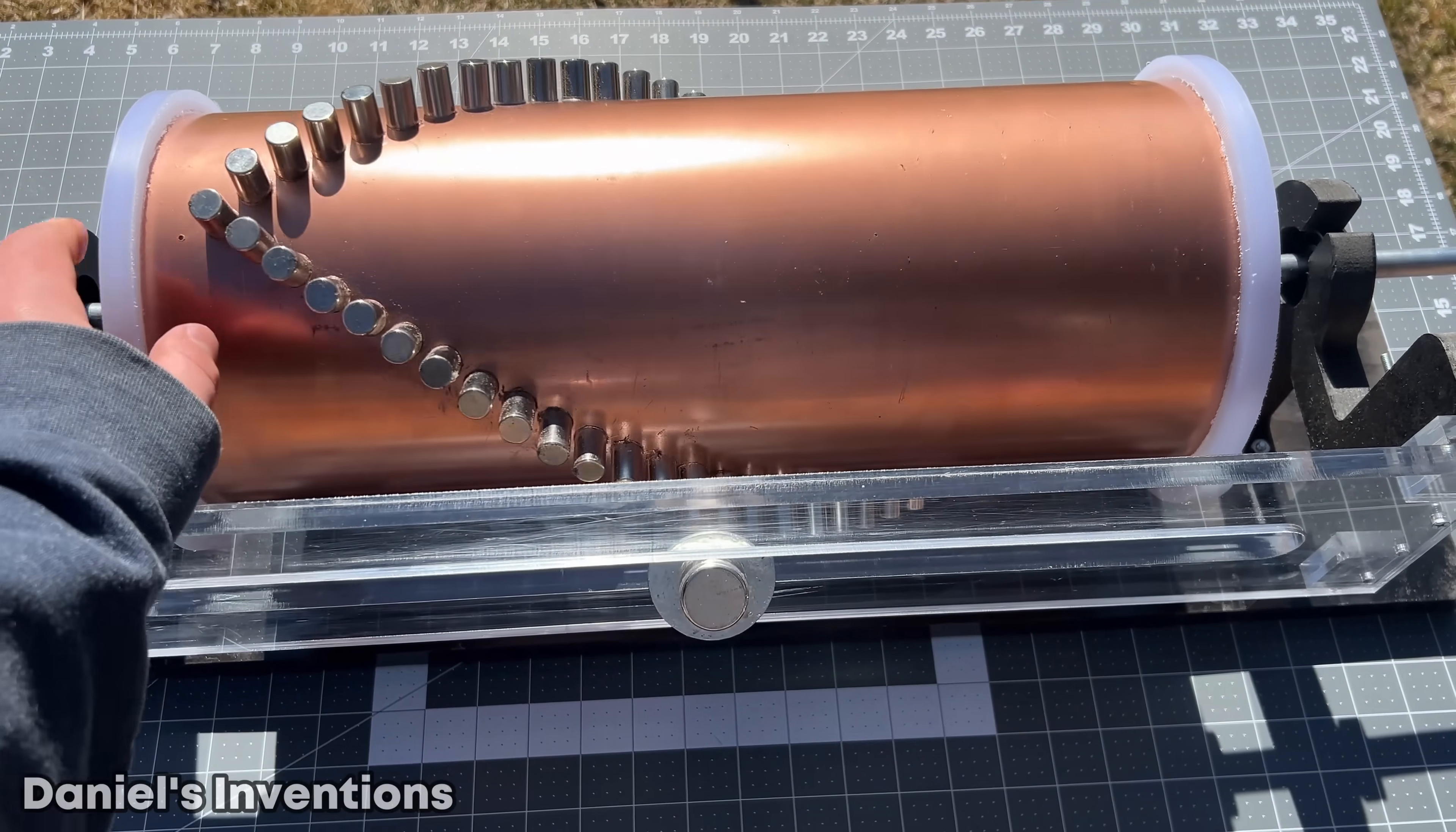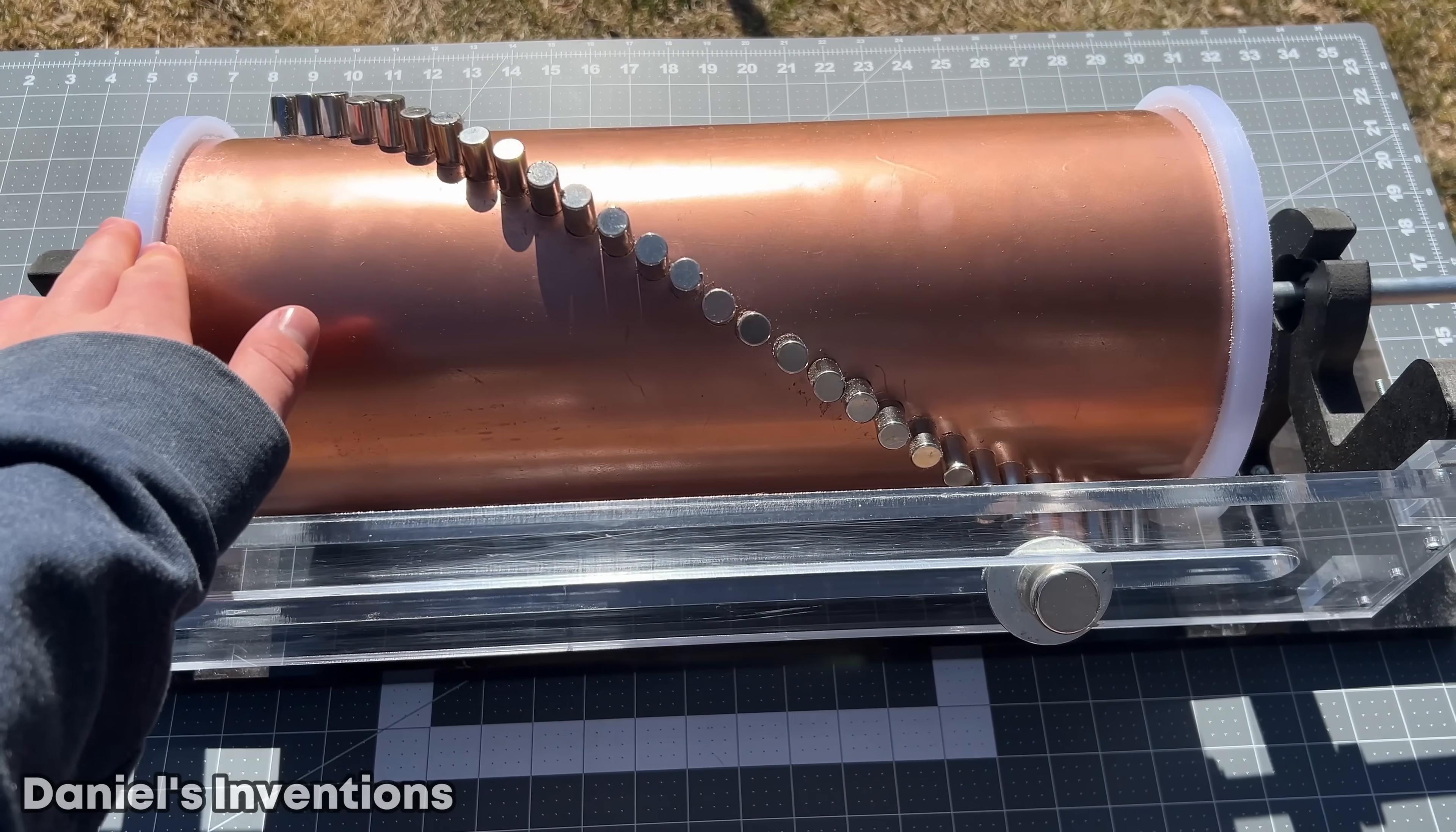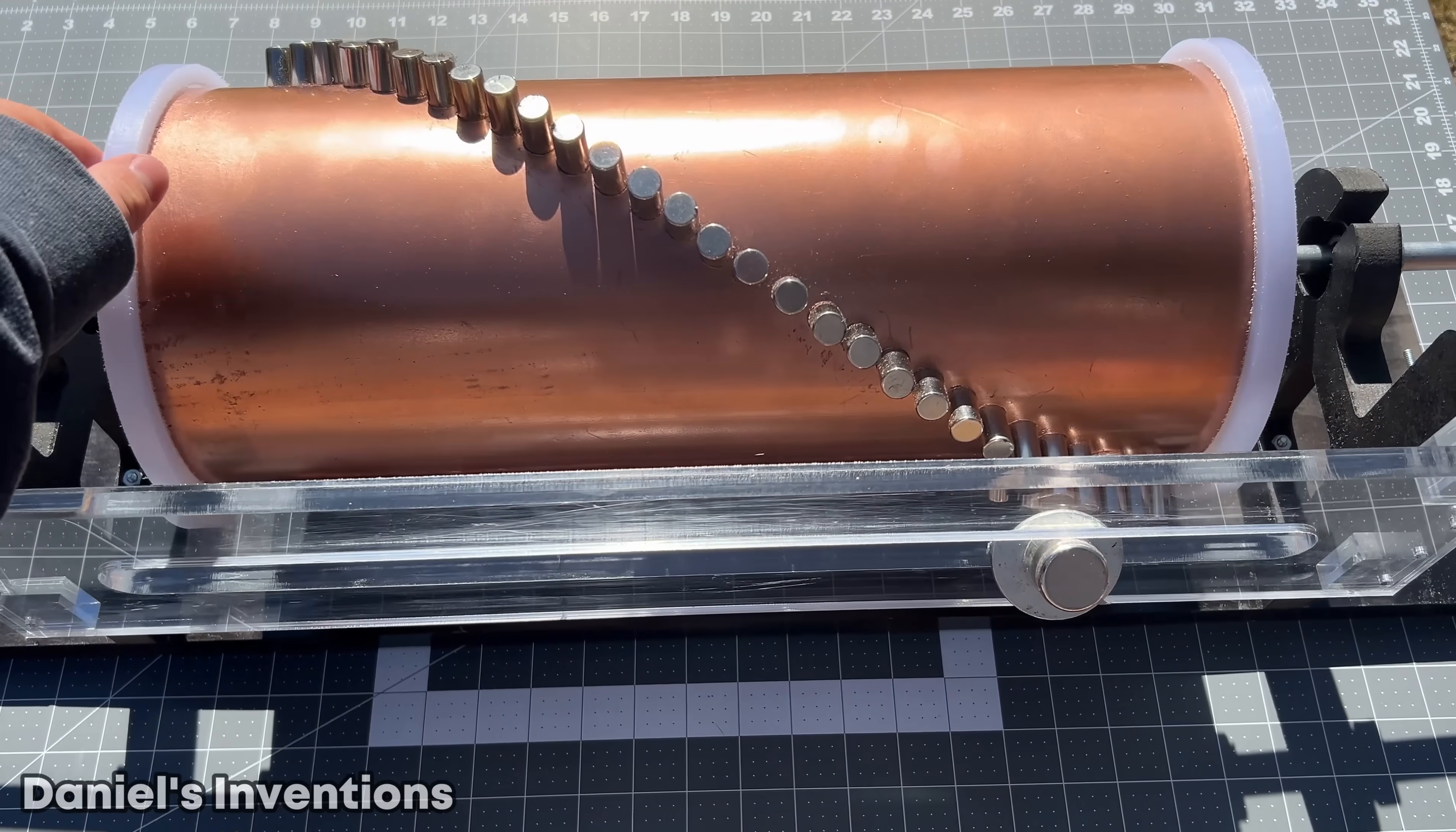Another test shows that when a rotor and stator are in attraction mode, by rotating the rotor, the actuator magnet follows the rotor instead.